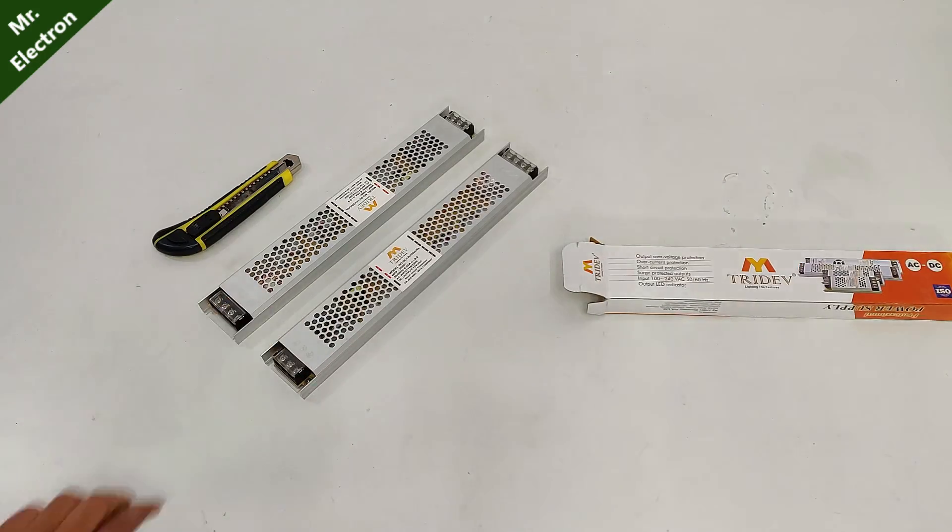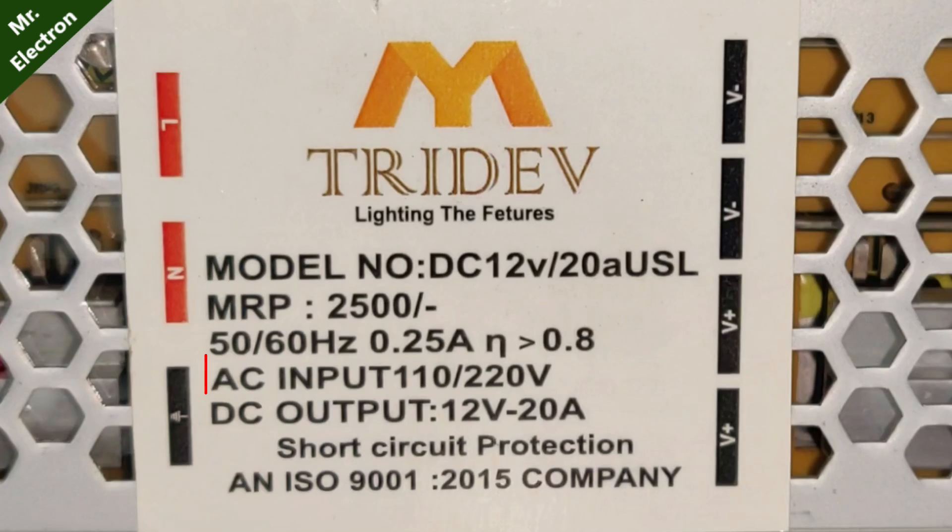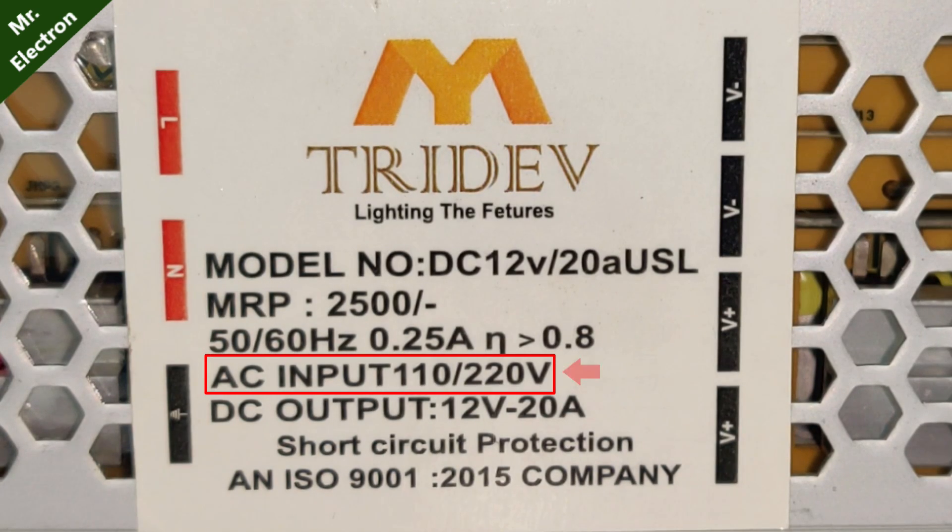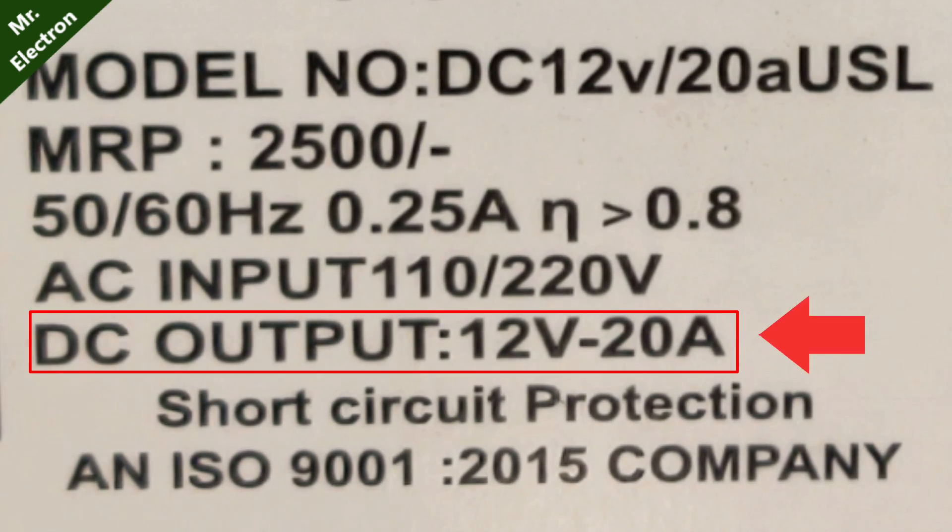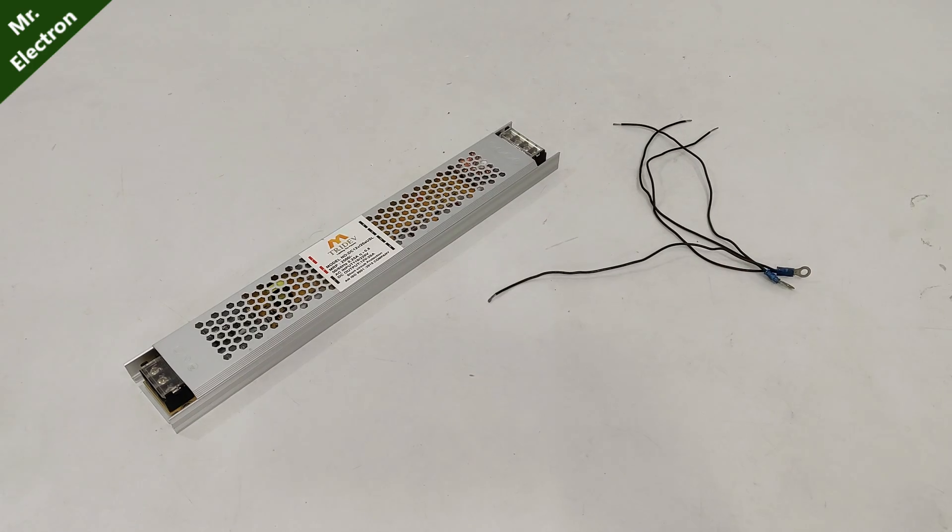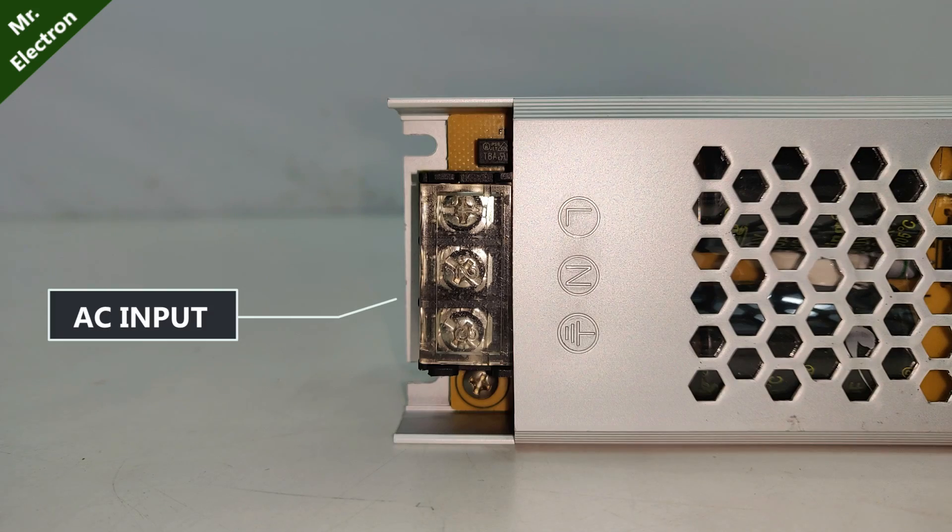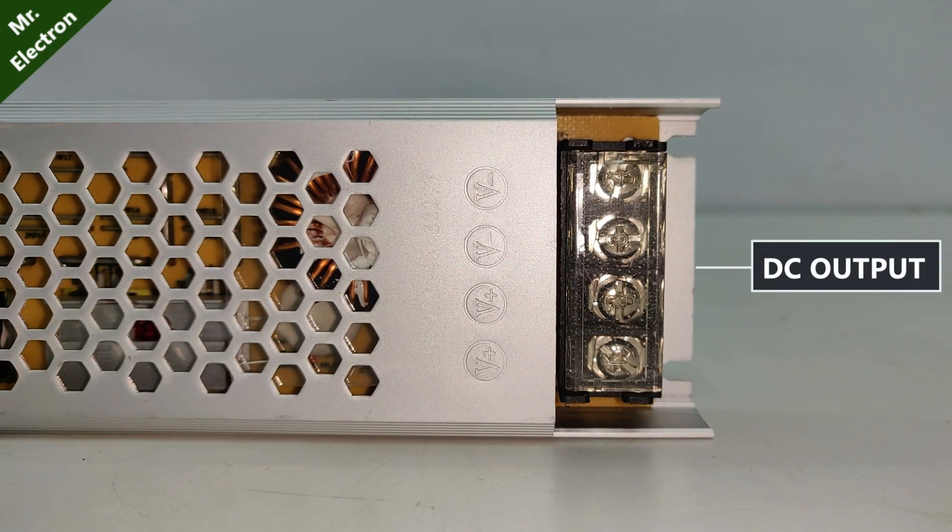Now the label says 110 volts to 220 volts input and a DC output of 12 volts and 20 amperes. So let's test them quickly. AC input, DC output.